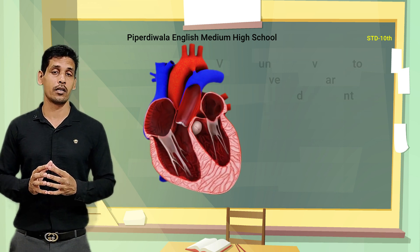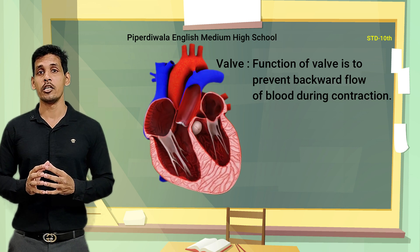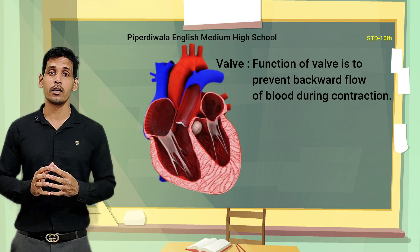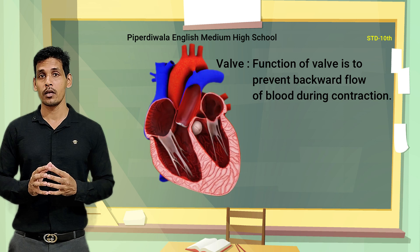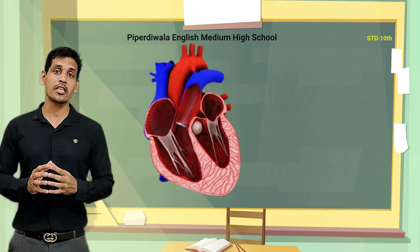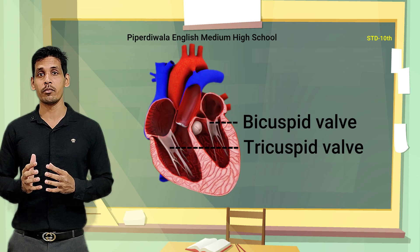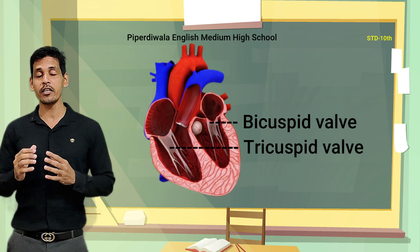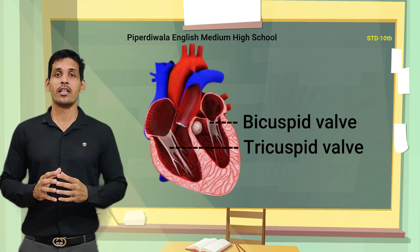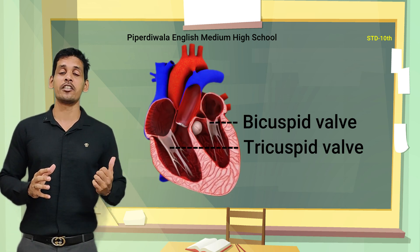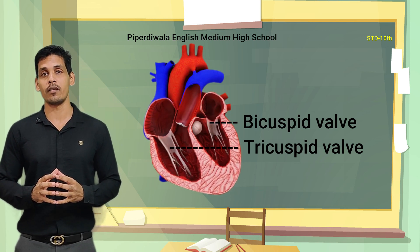There are valves present in the heart. The function of valves is to prevent the backward flow of blood during contraction. The valve known as tricuspid valve is present between the right atrium and the right ventricle, while the valve present between the left atrium and the left ventricle is known as bicuspid valve.